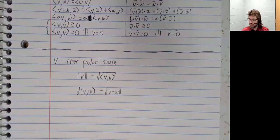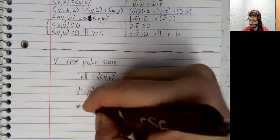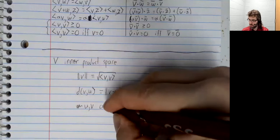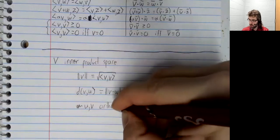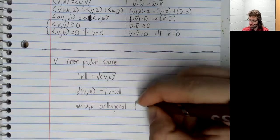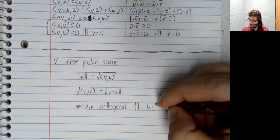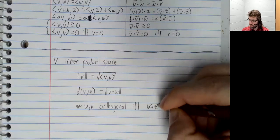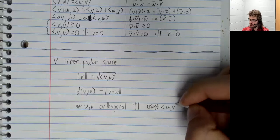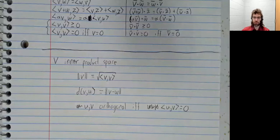Two vectors are orthogonal if and only if their inner product equals zero.